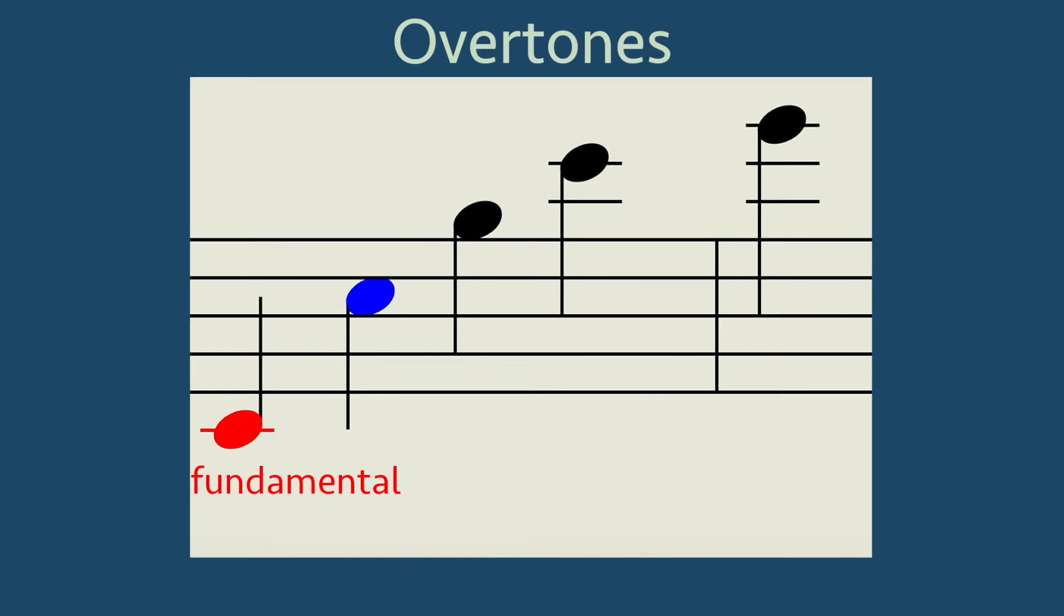The second harmonic is C an octave above the fundamental, the third harmonic is the G above the previous C, the fourth harmonic is C two octaves above the fundamental, and the fifth harmonic is the E above the previous C.